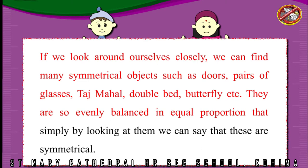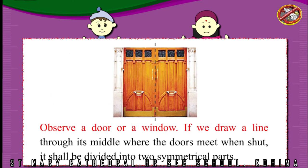They are so evenly balanced in equal proportion that simply by looking at them we can see that these are symmetrical. Observe a door or a window. If we draw a line through its middle where the doors meet when shut, it shall be divided into two symmetrical parts.